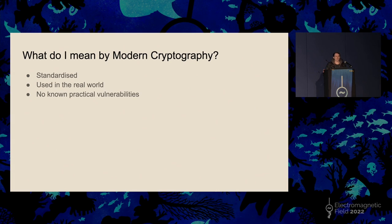What do I mean by modern cryptography? For my project, I want standardized ciphers that are actually used in the real world, because I think that makes it more interesting. And I don't want to use any known vulnerable ciphers. Something like RC4 is pretty old at this point — there are multiple published vulnerabilities in it — so I wouldn't want to use a cipher like that, even though it would be very easy to implement in Scratch.